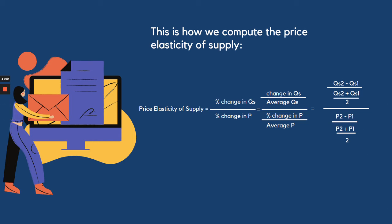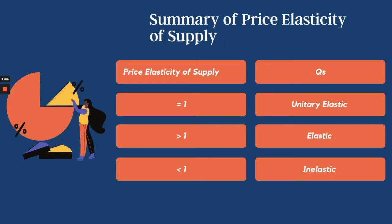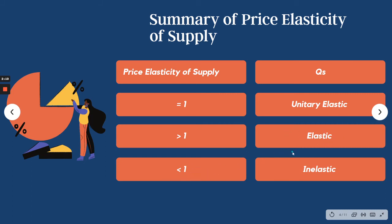This is the same as the price elasticity of demand, but this time we are using the quantity supplied. For interpretation: if the price elasticity of supply equals one, it is called unitary elastic; if it is greater than one, it is elastic; and if it is less than one, it is inelastic.